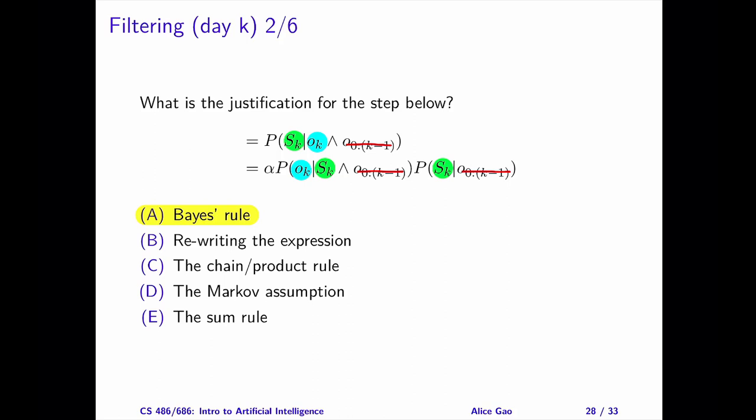The reason is that our model gives us the probability of the observation given the state, but it does not give us the probability of the state given the observation. So it is more convenient if we have a probability in the form of the probability of the observation given the state.